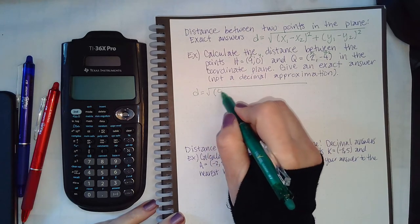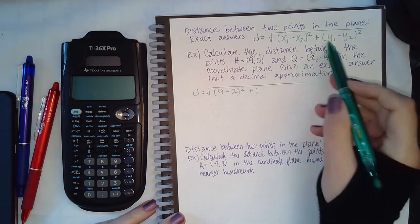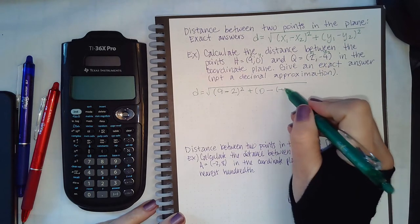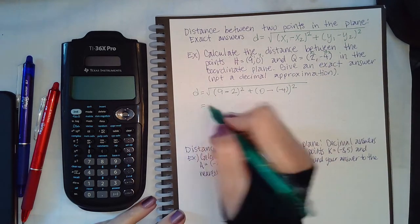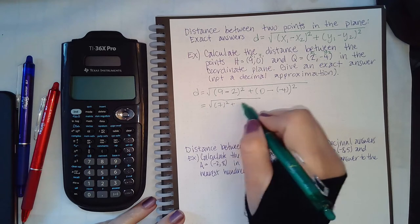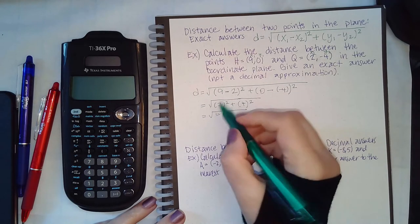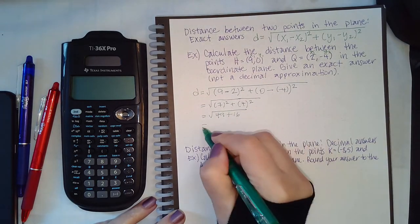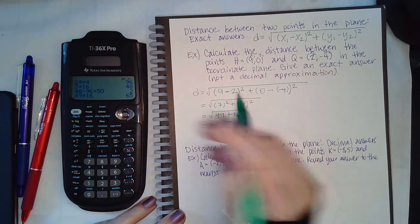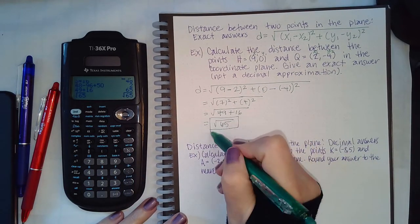So x1 is 9 minus 2 for x2, plus y1 which is 0 minus y2 which is negative 4, squared. Let's do the computation - we have to do what's inside the parentheses first, then we can do the squaring. We get 49 plus 16, which equals 65. I don't think that 65 is going to reduce any, so this is the exact answer.